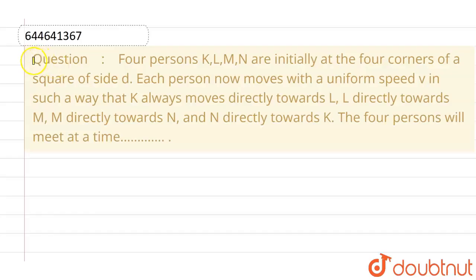Hello everyone. If we talk about this question, this given question is four persons K, L, M and N are initially at the four corners of a square of side d.